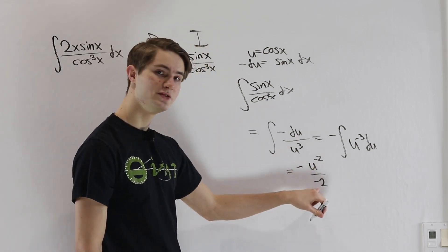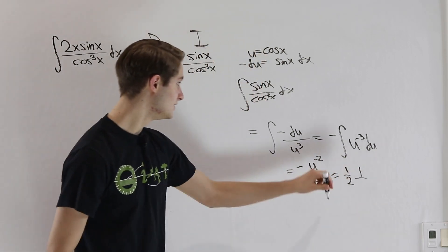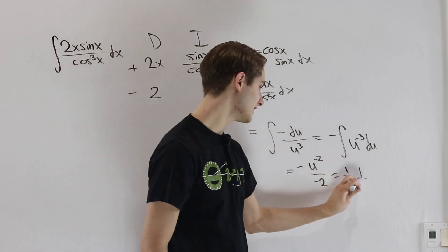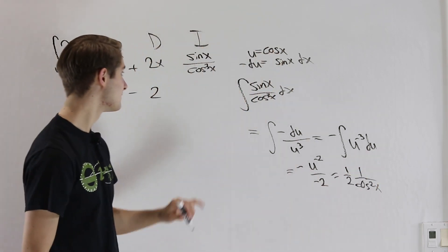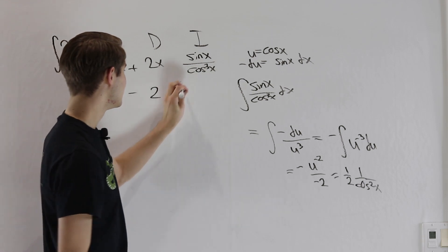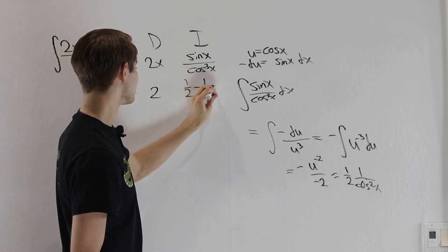Of course, those negatives are going to cancel out and we'll just get 1 half times 1 over u squared. u is cosine x. So we get 1 over cosine squared of x. That's going to be what we put right here. So we'll have 1 half, 1 over cosine squared x.